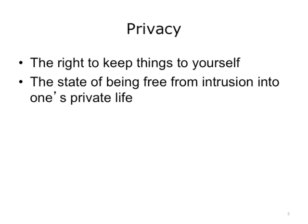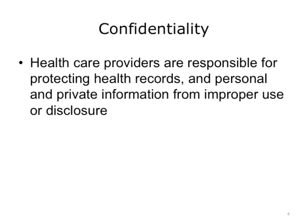It's important to understand the difference between privacy, confidentiality, and security. Privacy is a patient's right to control disclosure of their information — they can place restrictions on who can see it or who it is disclosed to. Confidentiality refers to the healthcare provider's responsibilities to ensure that patient data is not used or disclosed without proper authorization. Unauthorized means the patient did not give permission. There are exceptions for disclosure for public health activities, which we'll talk about later in this unit.